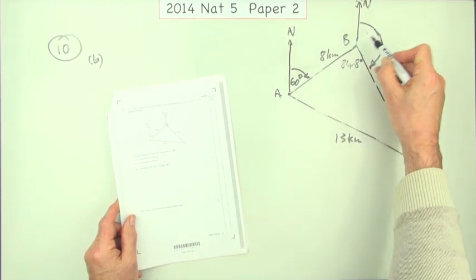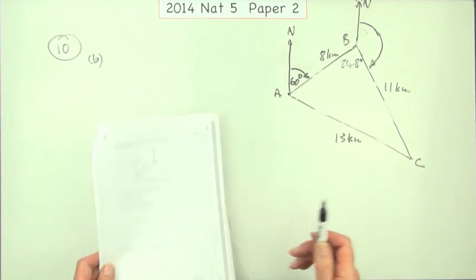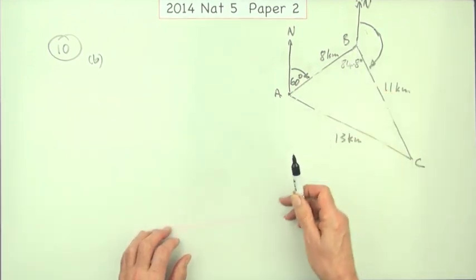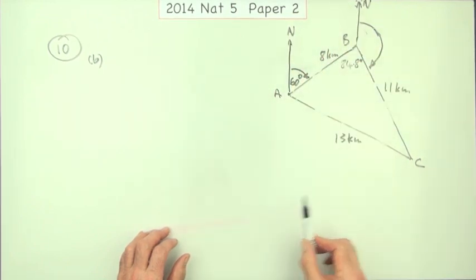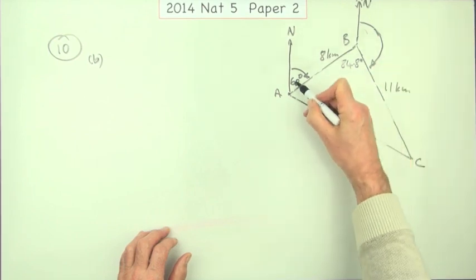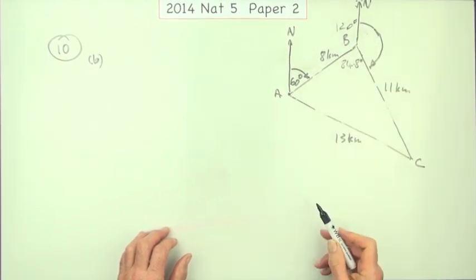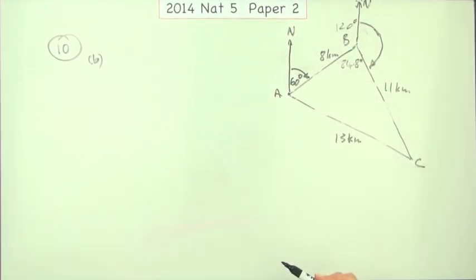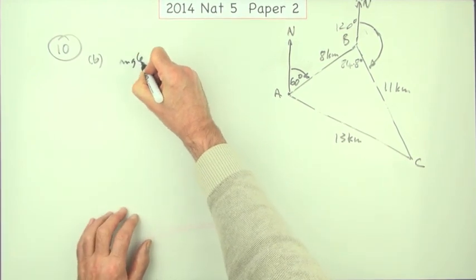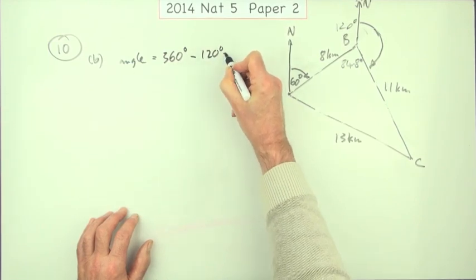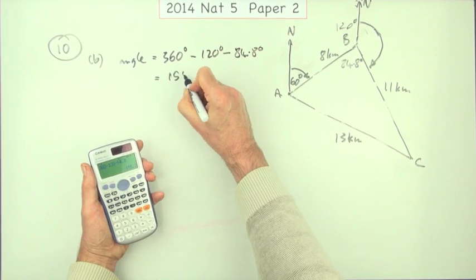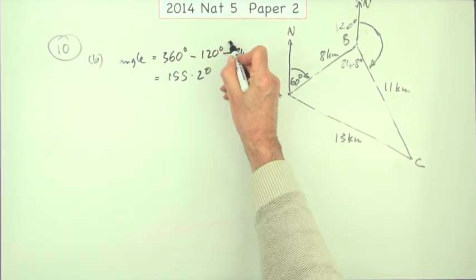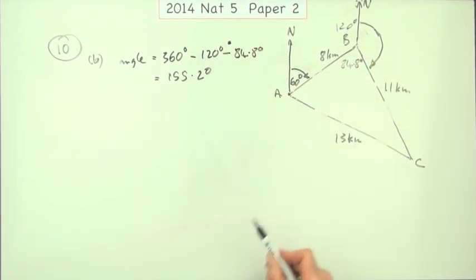For part B, finding the bearing of C from B — it depends how you transfer the angle. The important thing is having the north lines in; if they weren't there, you'd put them in yourself, because north lines let you transfer angles. You can extend the north line just so far, then note that if that angle is 60, its supplement is 120. The three angles make 360, so: bearing = 360 − 120 − 84.8 = 155.2 degrees. The first mark comes from knowing that the 60 degrees creates a supplement of 120 to complete a full turn.